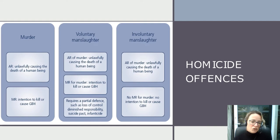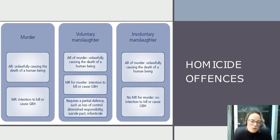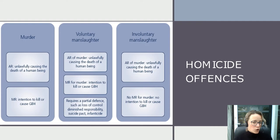One is something called the actus reus — the actus reus refers to the guilty act, or indeed omission, by the defendant or defendants. And something called the mens rea, which is the guilty mind, the state of mind of the defendant. In criminal law, if we're trying to prove guilt and criminal liability, we have to establish that those two elements are present. And every offence will have its own definition of what those elements are.